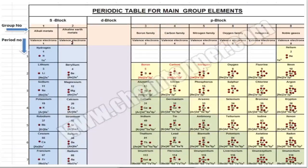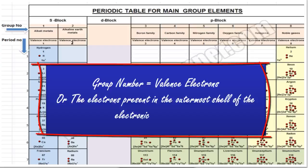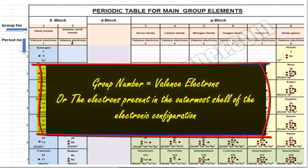As we have discussed earlier in our previous videos, valence electrons can be determined with the help of group number or these are the electrons present in the outermost shell of the electronic configuration. So if you know how to write down the electronic configuration of an element, you can easily predict its valence electrons.